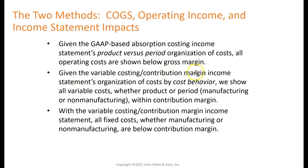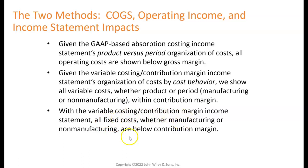Under the variable costing contribution margin organization, costs are organized by cost behavior. All variable costs — whether product or period — are part of the contribution margin, with both manufacturing and non-manufacturing variable costs above the contribution margin. All fixed costs, whether manufacturing or non-manufacturing, are below the contribution margin. So variable costs are up above, then you have a contribution margin, then all fixed costs below.